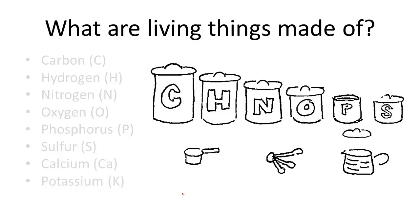We start with the common elements of living things. There are 92 natural elements, 25 of which are essential to life. Only four make up 96% of all living matter.